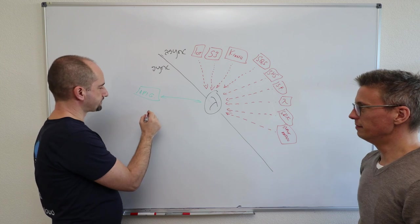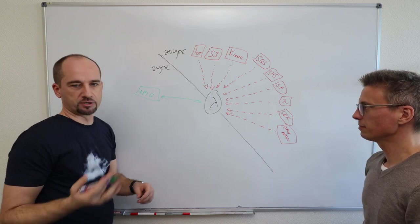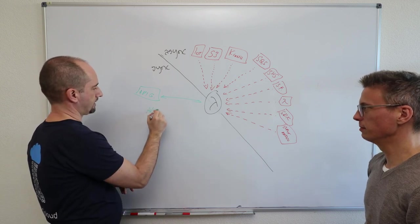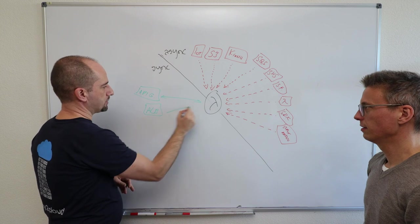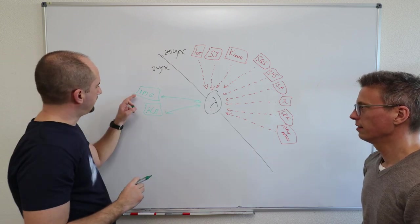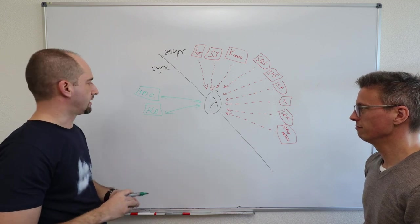Then for example, beside API Gateway, what we can use as well is like a load balancer, application load balancer. ALB. So ALB integrates with Lambda as well.